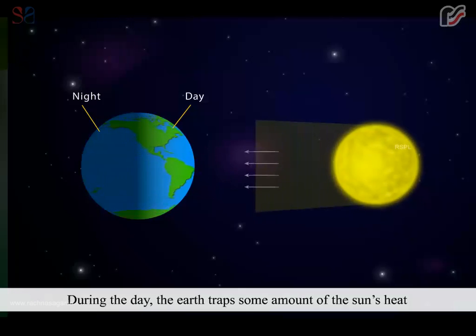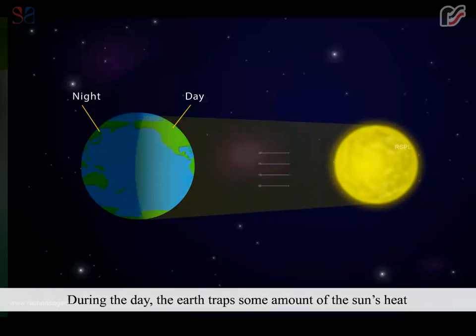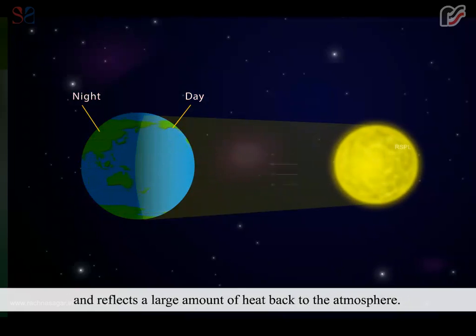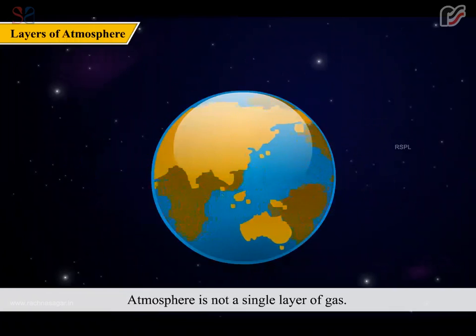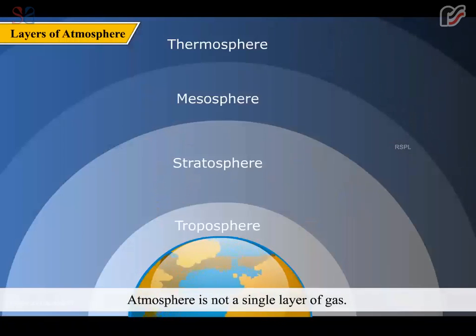During the day, the earth traps some amount of sun's heat and reflects a large amount of heat back to the atmosphere. The atmosphere reflects it back to the earth partially to give us warmth during night. Atmosphere is not a single layer of gas. It is classified into many layers. Let us know about these layers.